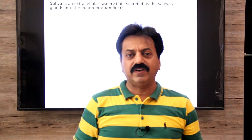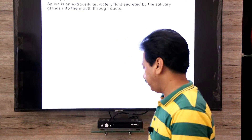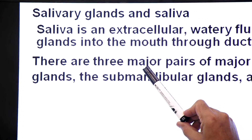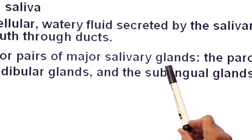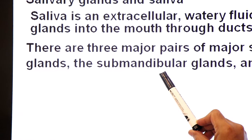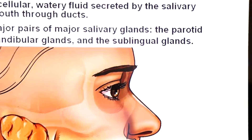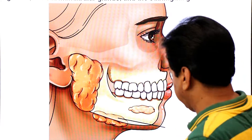There are two types of salivary glands: major salivary glands and minor salivary glands. As far as our textbook is concerned, we will only discuss major salivary glands. There are three pairs of major salivary glands: the parotid glands, the submandibular glands, and the sublingual glands.